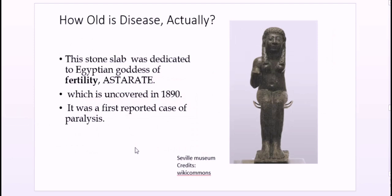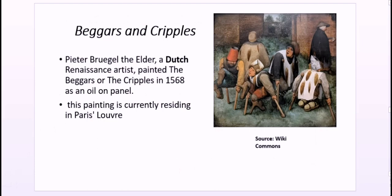After its discovery, the slab was carried to the Carlsberg Museum in Copenhagen. Another depiction of the Egyptian goddess of fertility, Ashtoreth, lies at the Seville Museum in Spain. This is considered the first reported case of polio, which is why it is so important — it was the first documented evidence of the disease.